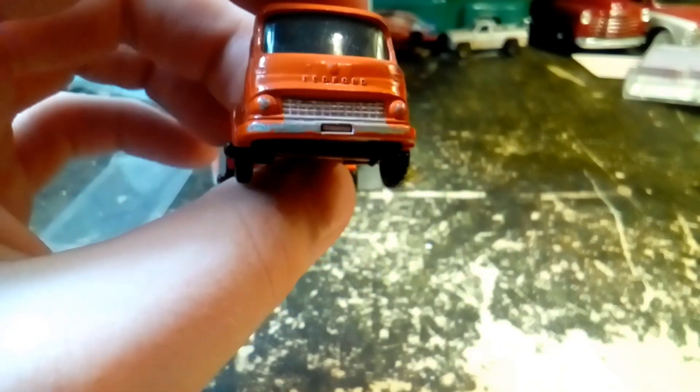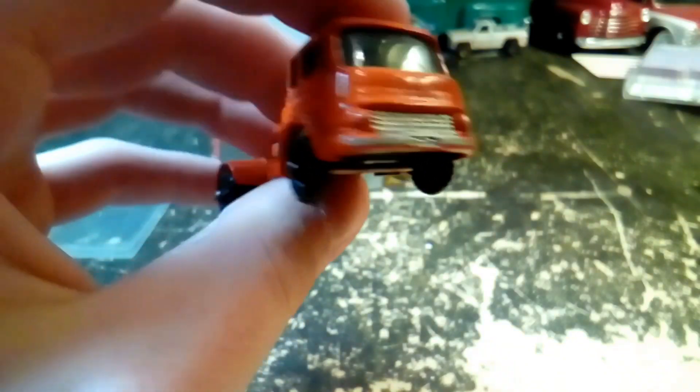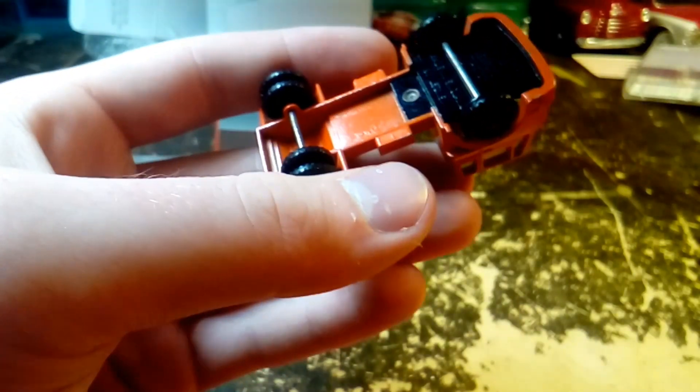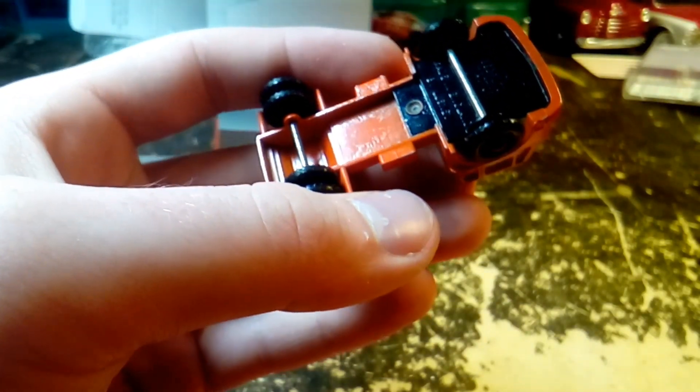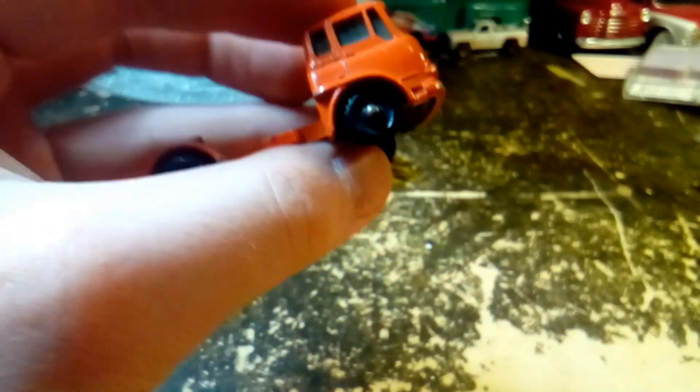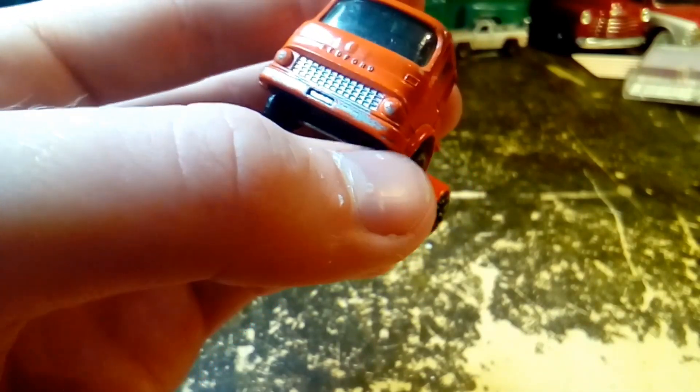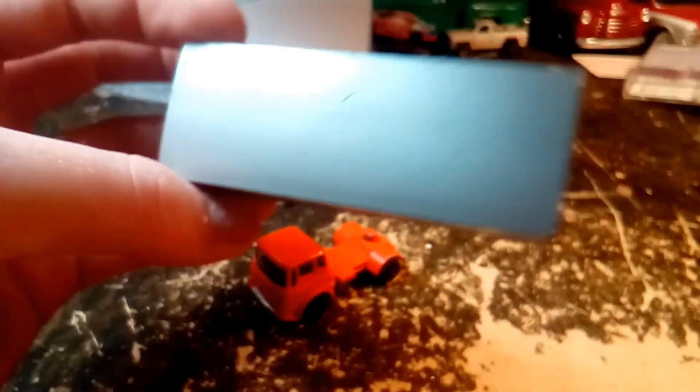Other than the chrome starting to come off of the grill on the front bumper, it's in really good shape. I don't think this was played with much. If it's been redone, it's been redone long enough ago that stuff's starting to wear off. I don't think it's been redone though. I think it's just in really good shape.